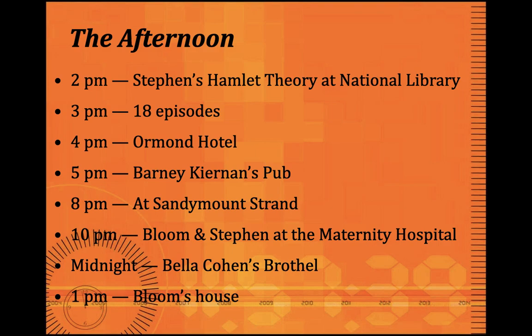The last chapter — the 18th — is Molly's soliloquy. Molly is thinking aloud about her childhood in Gibraltar, about having sex with Boylan that afternoon, about her singing career, her desire for glamour, money, and travel, and also about Stephen Daedalus. At the end she remembers how she made love to Leopold Bloom for the first time. This shows that she prefers Bloom over Boylan, and the novel ends on a happy note.